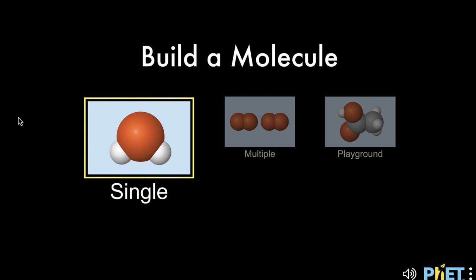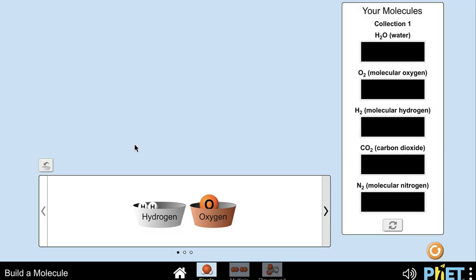So let's get started with these. Let's look at the single molecules first and it will have you build certain collections of molecules. You have your molecules for the first set down here so here you have hydrogen and oxygen and here you have what you're trying to build. You're trying to build water, molecular oxygen, molecular hydrogen, carbon dioxide, and nitrogen.